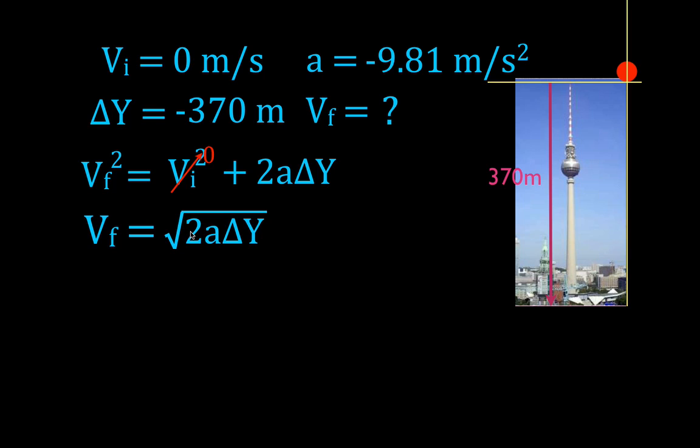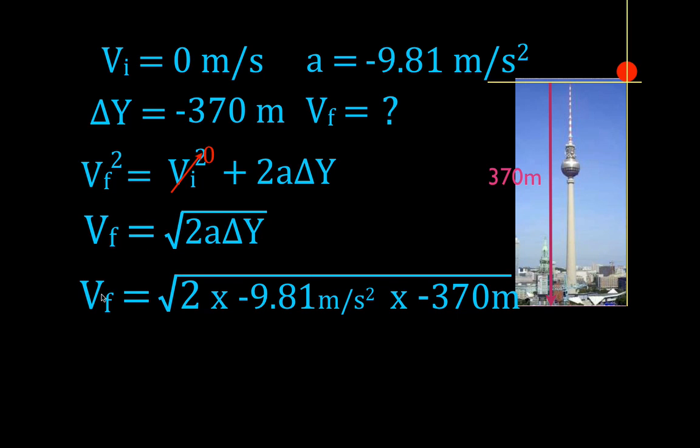All we're going to simply do is plug in the values. The final velocity is equal to two times minus 9.81 times minus 370. Minus and minus is positive. We can take the square root of a positive number, and because we have a square root, we have a negative or positive answer.